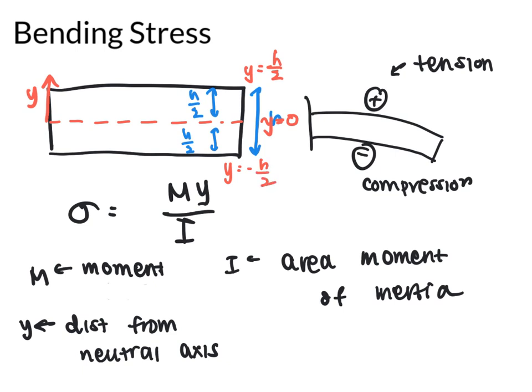So things to note, when you're bending a beam, half of the beam will be in tension, which is the top half, and it's going to be labeled by a positive bending stress, and the bottom of the beam will be in compression, which is shown by the negative sign.